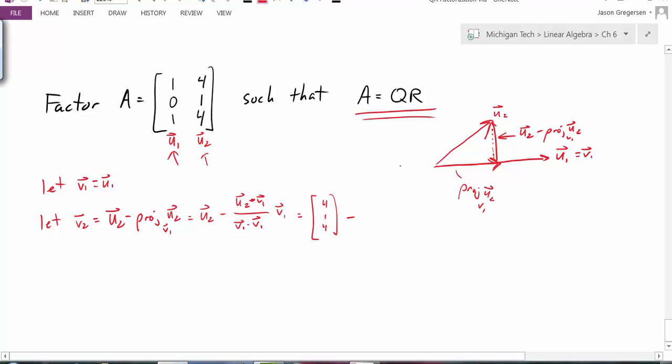That will give me 4 plus 0 plus 4. Then I have V1 dotted with itself. That's 1 plus 0 plus 1, so that will be 2. And I have my vector V1.